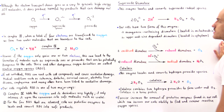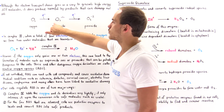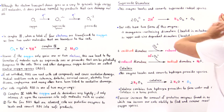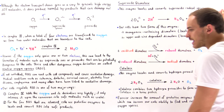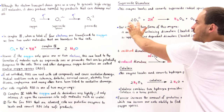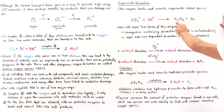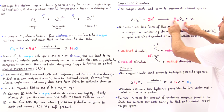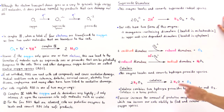Superoxide dismutase is the enzyme that locates and converts superoxide radical species. The general reaction catalyzed by superoxide dismutase takes two superoxide anions and two H⁺ ions and reacts them to form a single hydrogen peroxide molecule — which is itself unsafe, as we'll see — along with a diatomic oxygen molecule, which is safe.